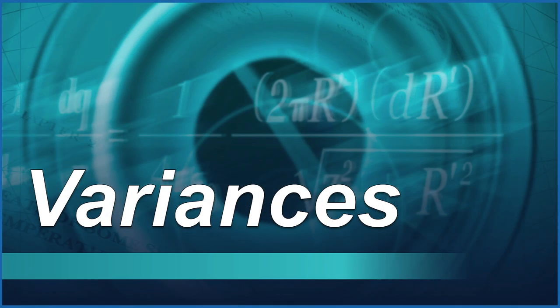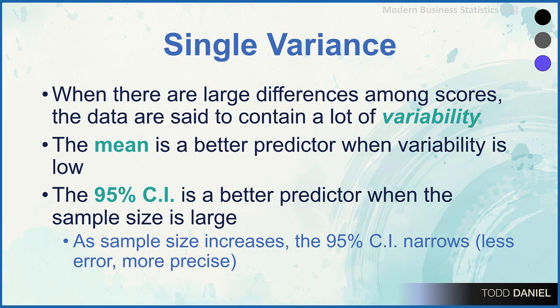We started off block B talking about variances, and I introduced variance by referring back to variability — something we discussed way back in the beginning. Variability is how close or far apart scores are around the mean. When there's a large difference among the scores, those data are said to contain a lot of variability. But when the scores are very close together around the mean, we would say there is a small amount of variability within that dataset.